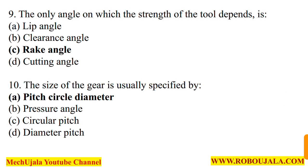In question number 9, they are asking: the only angle on which the strength of the tool depends is what? From Theory of Machines, the most important angle regarding tool strength is the rake angle. Option number C is the correct option, because rake angle defines the strength of the tool.